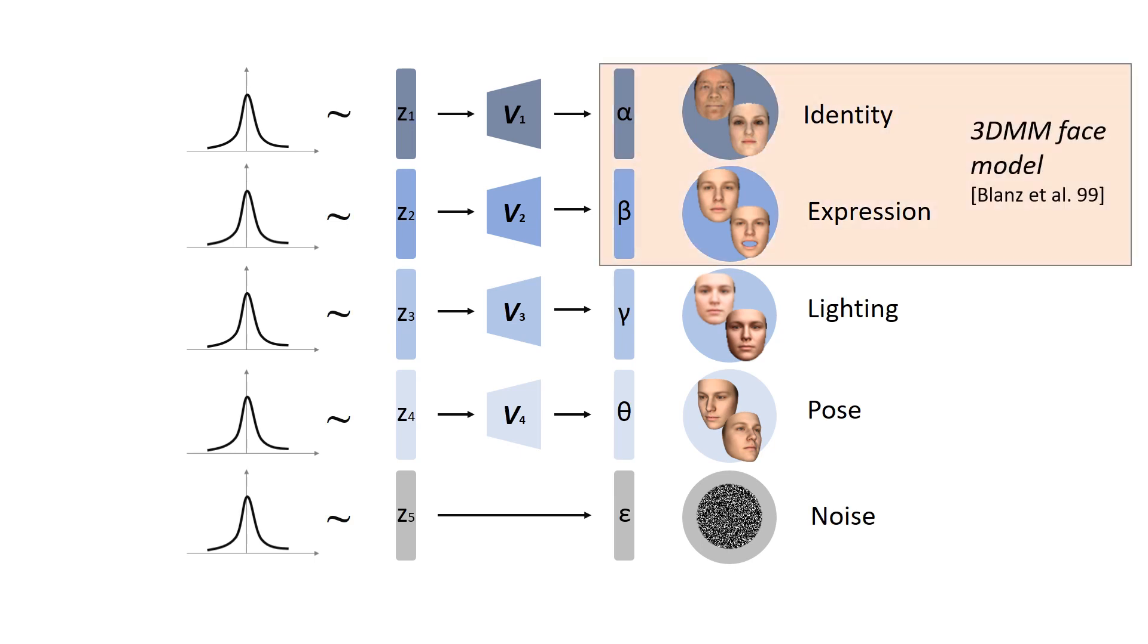Here, the identity and expression variables represent the coefficients of a 3DMM face model. The lighting variable is the spherical harmonics lighting model parameters, and the pose variable contains three Euler angles in 3D. These variables fully depict the geometry and appearance of a 3D face, and we can obtain a 2D face image using rendering.